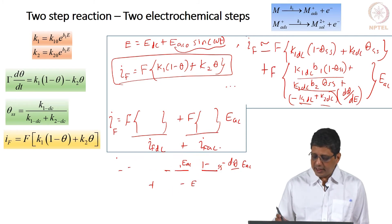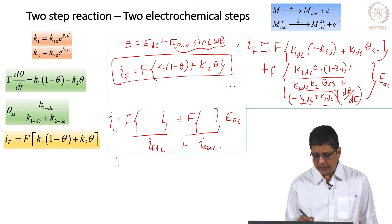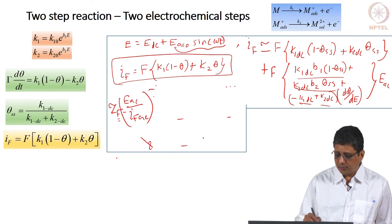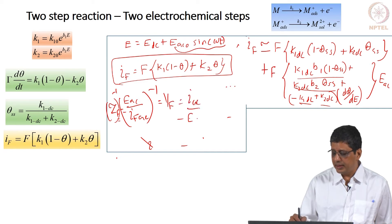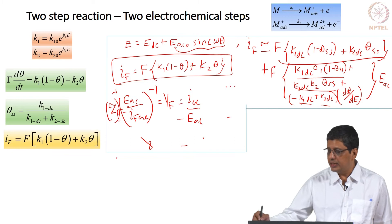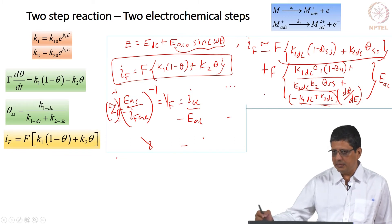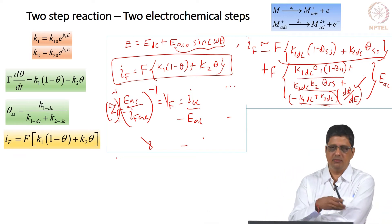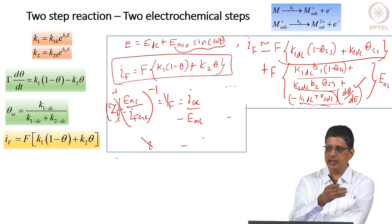The faradaic current is written in terms of I_DC and I_AC. If I want the impedance, I write the faradaic impedance as E_AC / I_F,AC, or the admittance as I_AC / E_AC. As long as I can get d(theta)/dE correctly, I have an expression for the faradaic admittance, which means I can get the faradaic impedance and the total impedance.